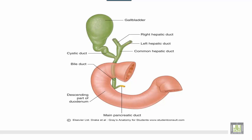This shows the right and left hepatic ducts, the common hepatic duct, the gallbladder with its fundus, body, and neck, and the cystic duct connected with the common hepatic duct to form the common bile duct.